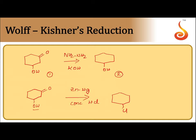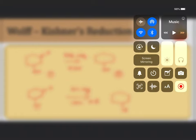Clemmensen's reduction is widely used for the reduction of aldehydes or ketones which are sensitive to alkalis. Wolff-Kishner reduction is used when the carbonyl compounds are sensitive to acids. In both reductions, the C=O group is converted to CH₂ giving the corresponding hydrocarbon. If zinc amalgam and concentrated HCl is on the arrow it is Clemmensen's reduction; if hydrazine and potassium hydroxide is on the arrow it is Wolff-Kishner reduction.